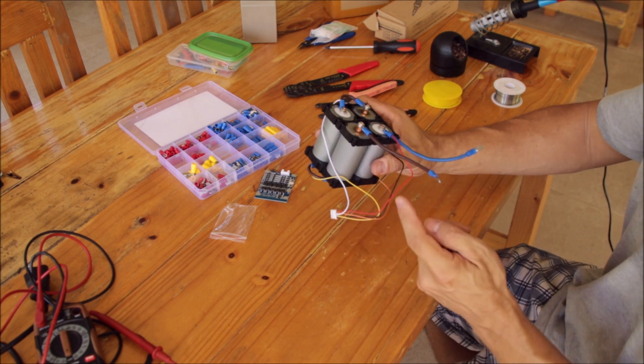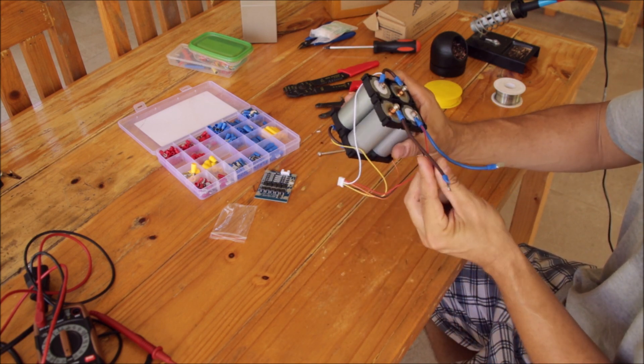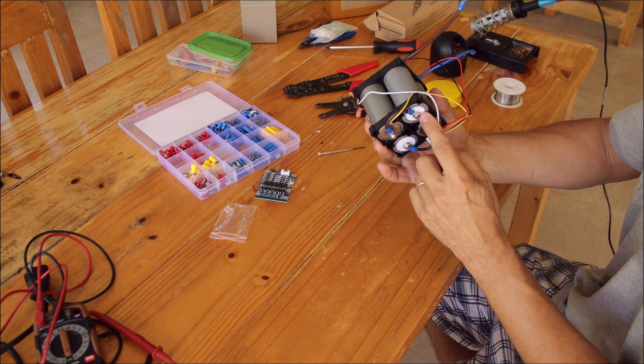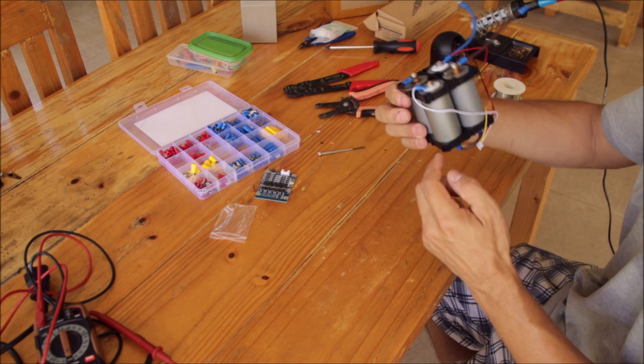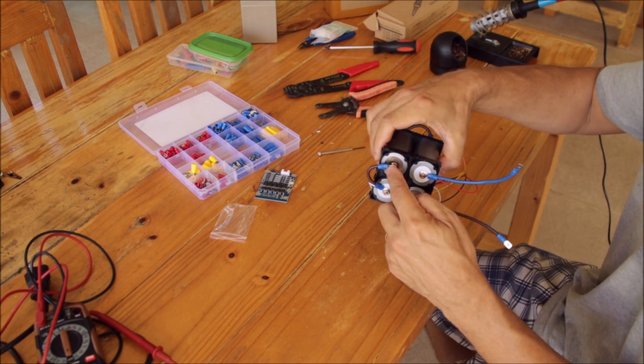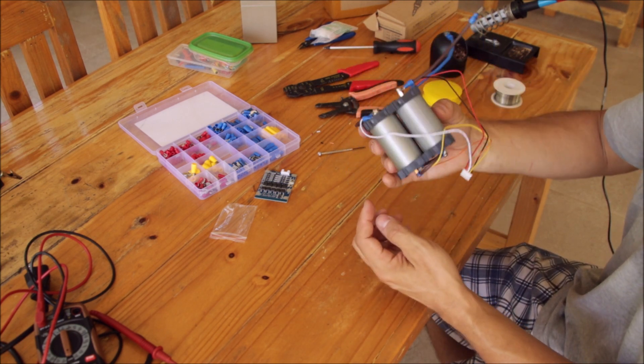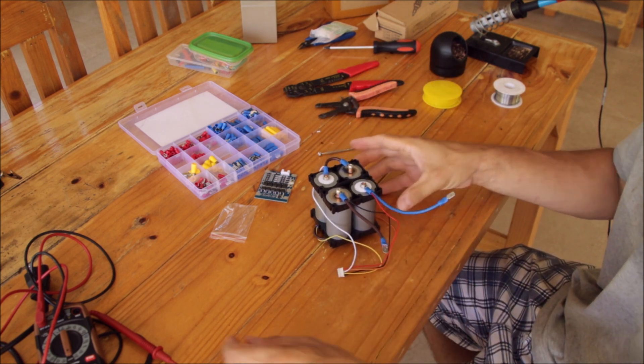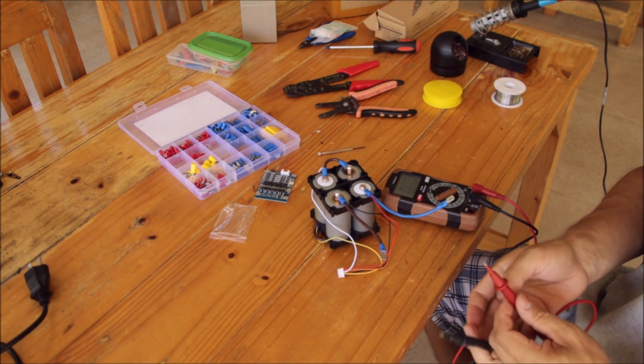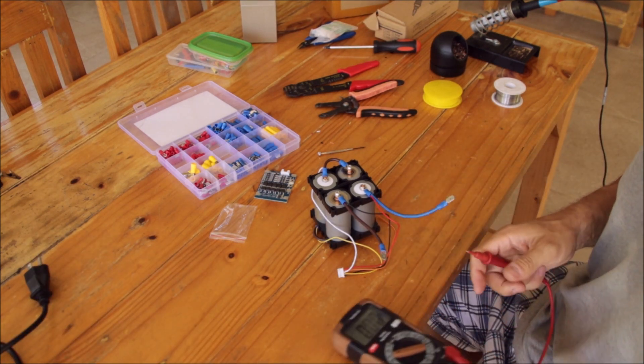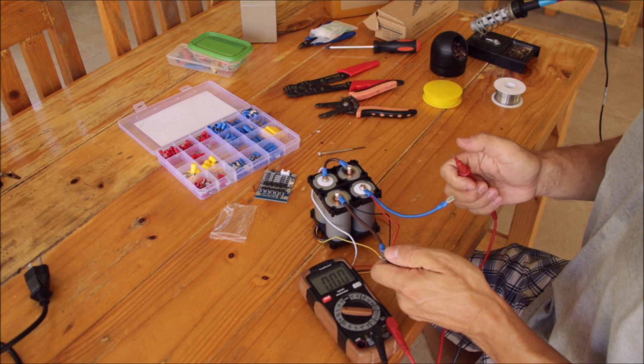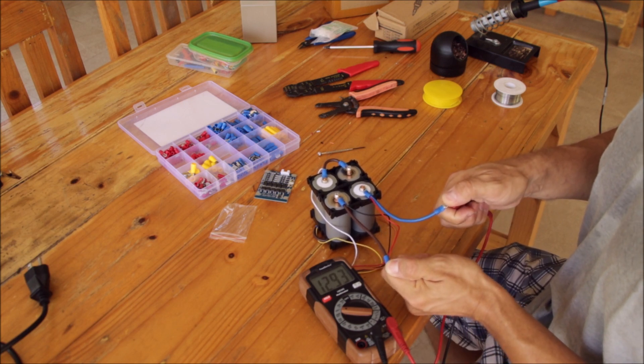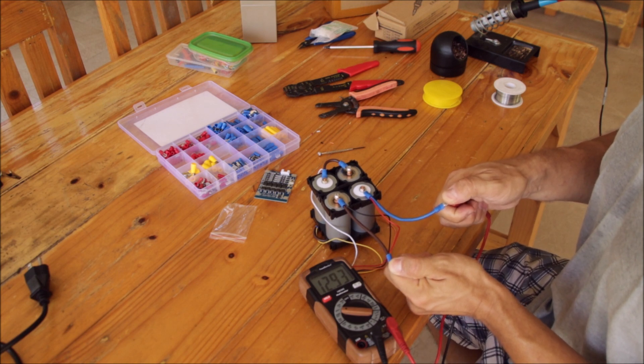So let's check it. Here we have our common minus. We're going down. Next plus minus, going up. Plus minus, going back again. Plus minus. So if we measure the voltage, we of course need to see 12 volts here. Each cell had 3.2 volts before. And you see here 12.9 volts. So everything is fine.